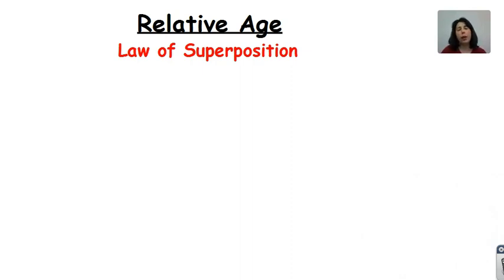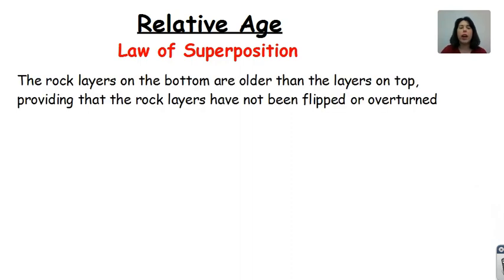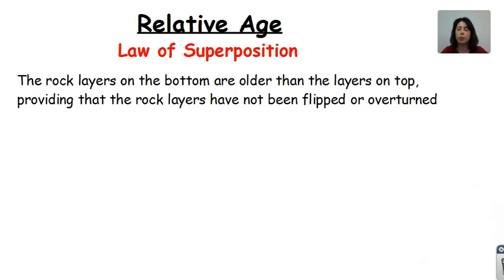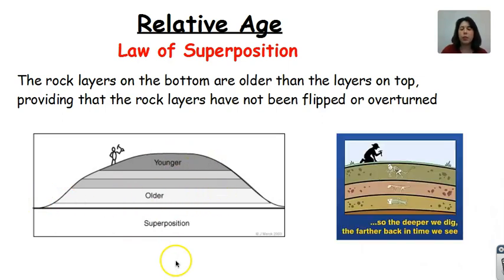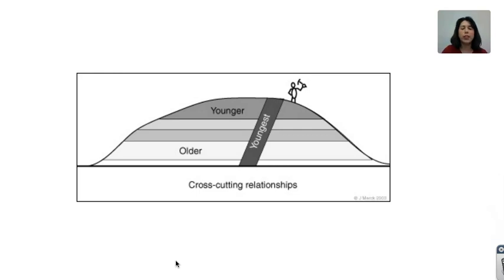Another factor to keep in mind when discussing relative age is the law of superposition, which says that rock layers on the bottom are older than the layers on top, providing that the rock layers have not been flipped or overturned. Kind of like if you have a laundry hamper and haven't done your laundry all week — the clothes you wore earlier in the week will be at the bottom and the clothes you wore most recently would be at the top. So the oldest rocks are on the bottom and the younger ones on top; the deeper we dig, the farther back in time we can see. That said, if you have an igneous intrusion cutting through those layers, that intrusion is going to be younger — so make sure you take note of igneous intrusions and contact metamorphism.